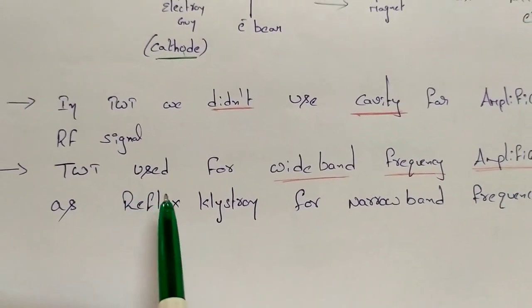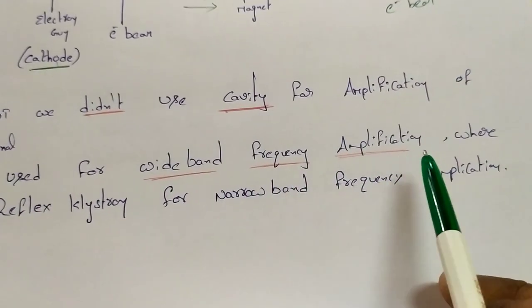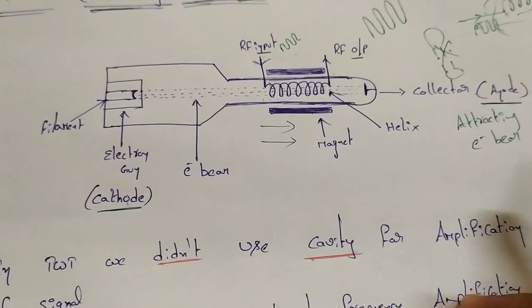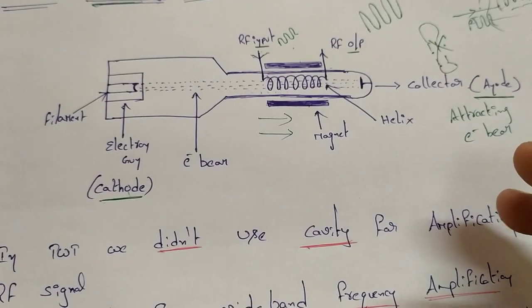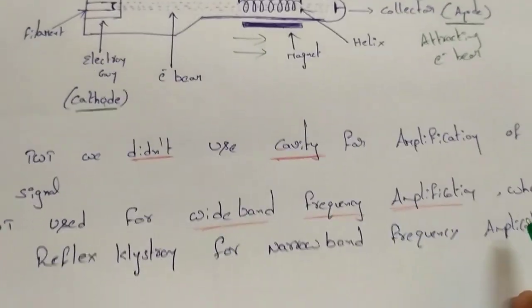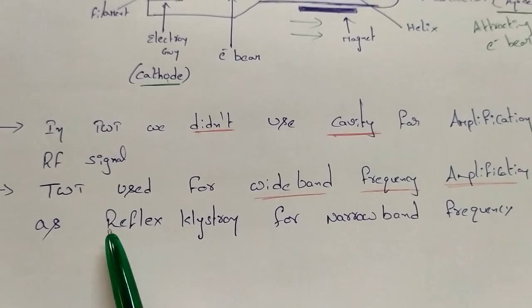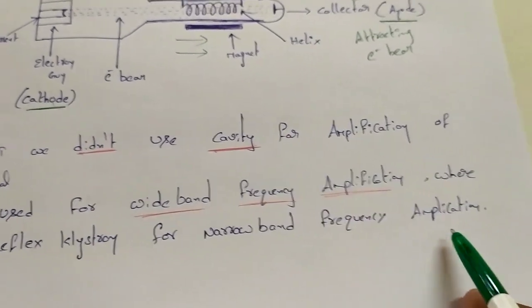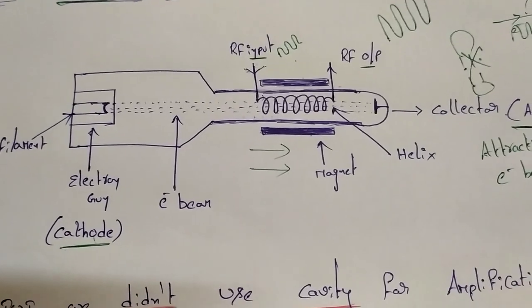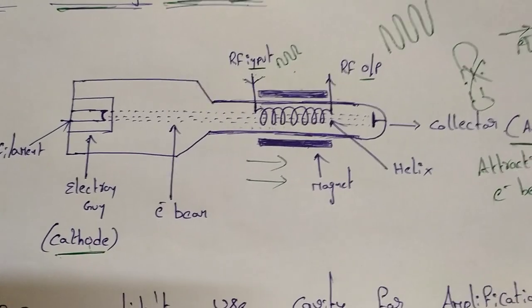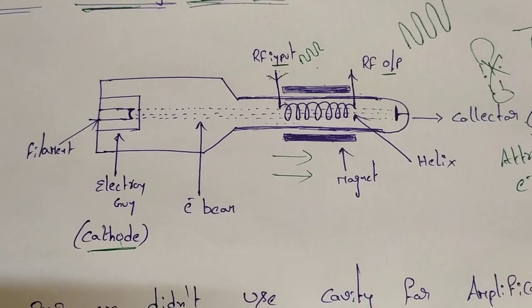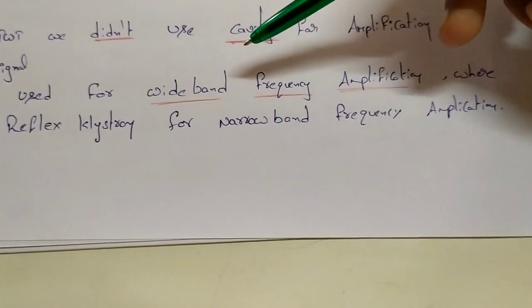The TWT is used for wideband frequency amplification. Whereas the Reflex Klystron is used for narrowband frequency amplification — small bandwidth. The TWT is used for wide bandwidths.